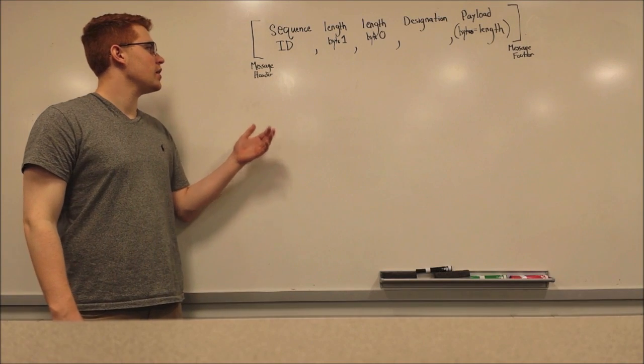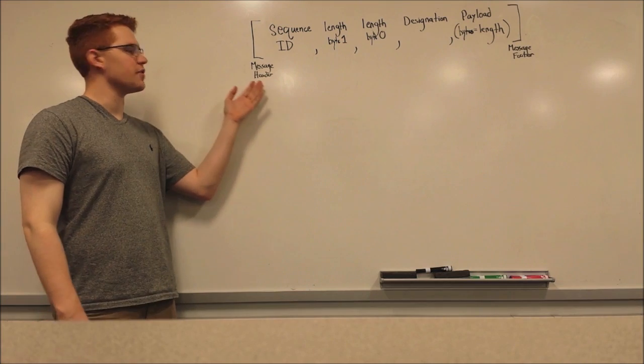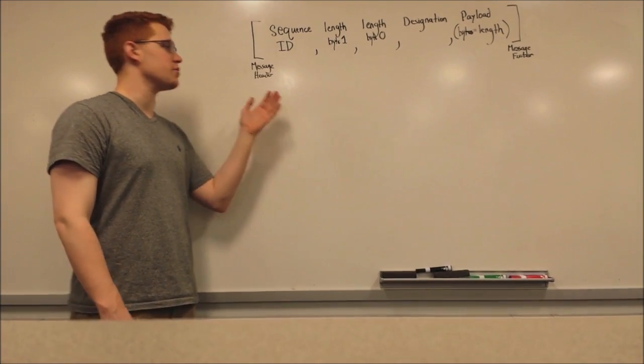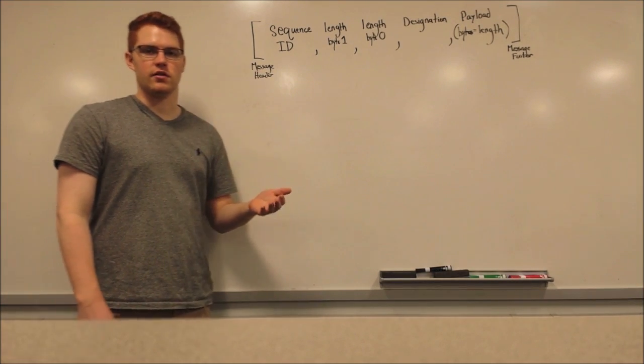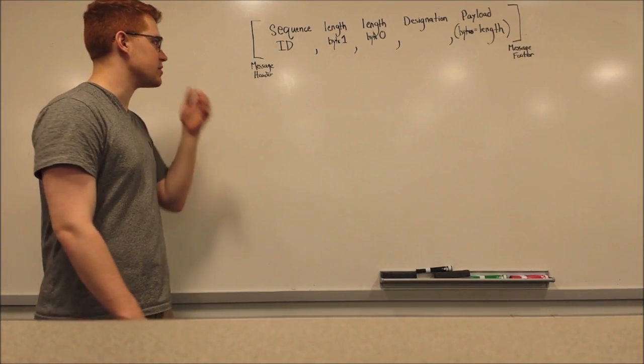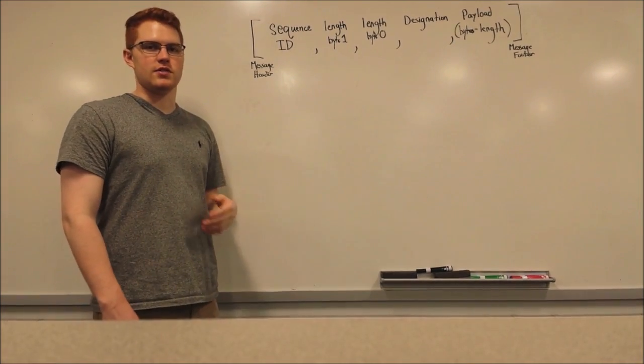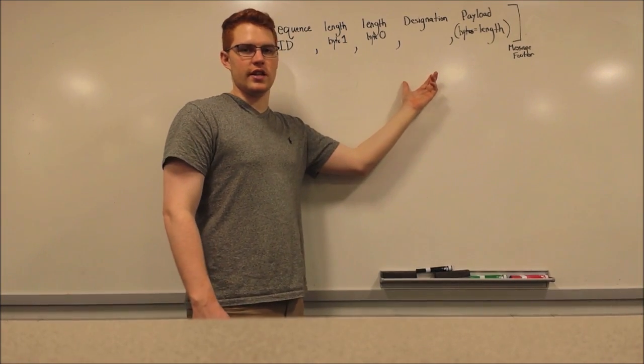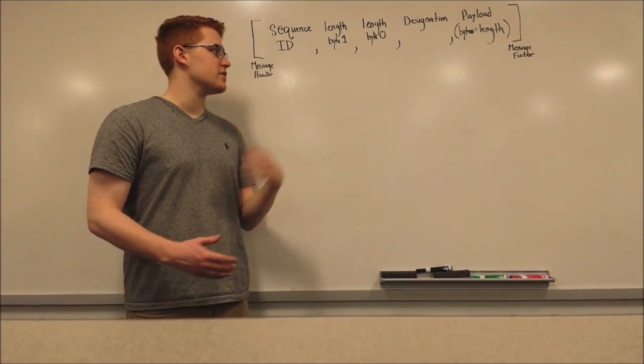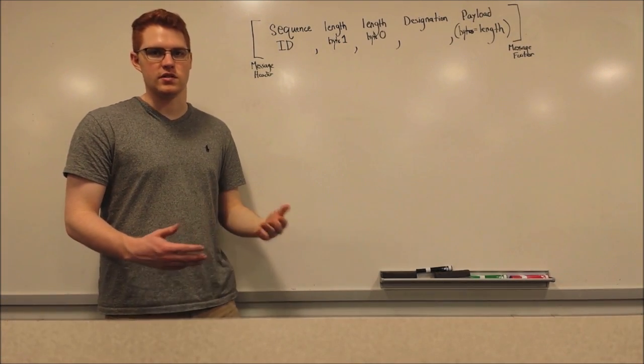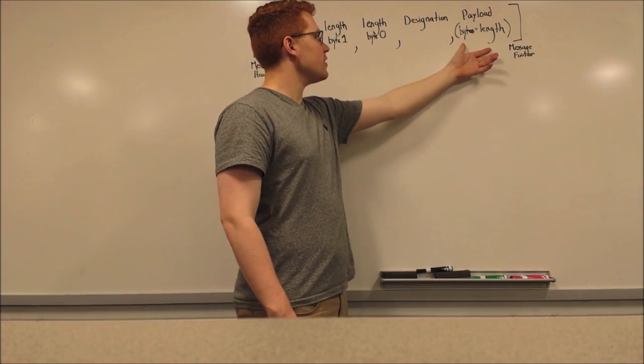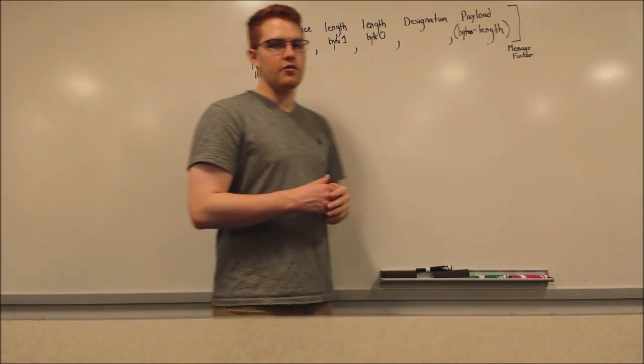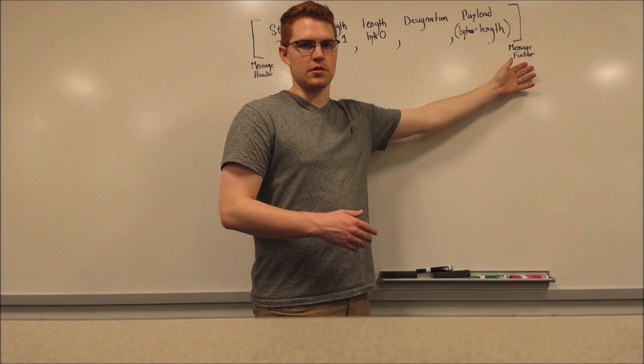This is our communication scheme. Every communication begins with a message header, which is in the form of the opening bracket. That's followed by a sequence ID, which is a one-byte number that goes from 0 to 255. Rollovers are handled on the server, so we wanted to keep it at one byte to make the message length shorter. Then there are two length bytes, which allows the length to be anything from 0 to 65,535. Then there's a designation. The designation tells us what kind of message it is. If it's a control message, that will cause it to be handled differently than if it's a sensor message. Following that is the payload. The payload is the same number of bytes as the length. And then every message is completed with a message footer, which is the closing bracket.